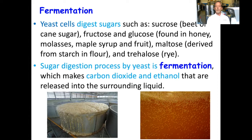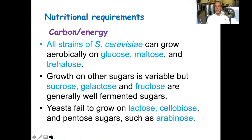The sugar digestion process by yeast is fermentation, which makes carbon dioxide and ethanol that are released into the surrounding liquid. Important for yeast is the source of carbon or energy. All strains of Saccharomyces cerevisiae can grow aerobically with oxygen on glucose, maltose, and trehalose. Growth on other sugars is variable, but sucrose, galactose, and fructose are generally well-fermented sugars.